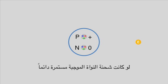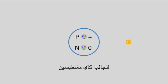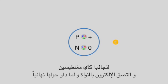If the nucleus charge is constantly positive, then the electron would have gotten stuck to it instead of spinning around it.